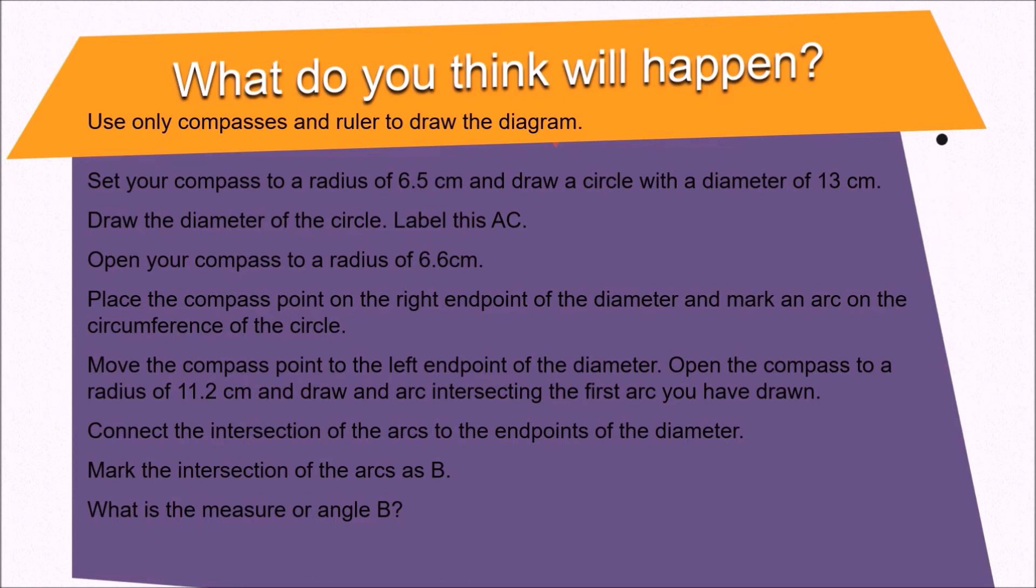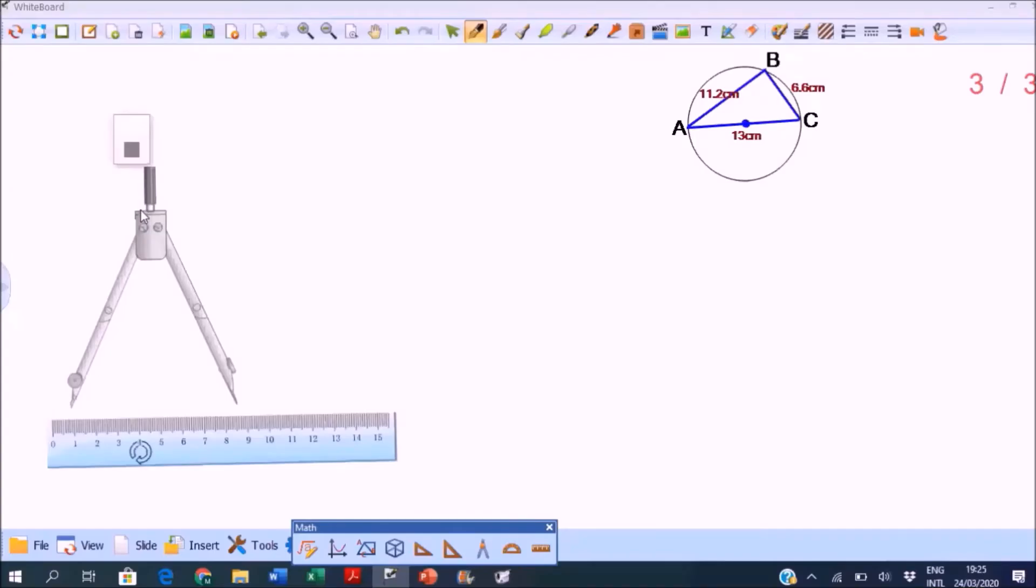So what did you find out? Let's check it. We will use a compass and a ruler only. First mark the center of the circle, draw a small dot.